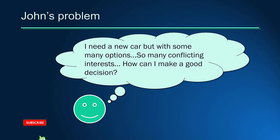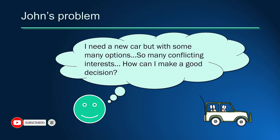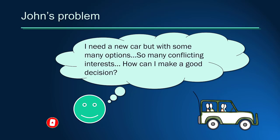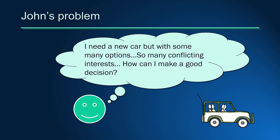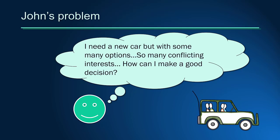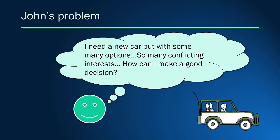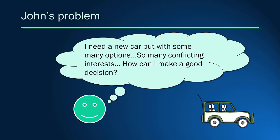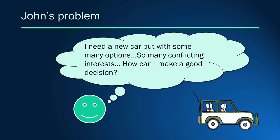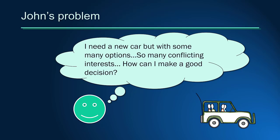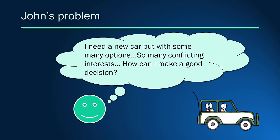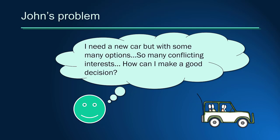Let's see how the method works in a simple example. John needs to buy a new car, but he is very confused with so many options. He is thinking about a cheaper and fuel efficient model, but his family is asking for a big and fancy car. His decision involves conflicting interests that are difficult to accommodate. The question is how to find the most suitable alternative that better accommodates all family needs and desires.